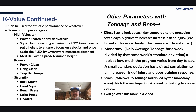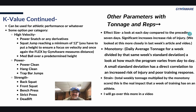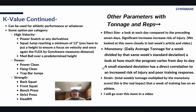Other parameters derived from tonnage and reps include effect size, which we've covered in past videos. Look at each day compared to the preceding seven days — significant increases raise the risk of injury, so step up and step down gradually relative to the past seven days. Monotony is the daily average tonnage for a week divided by that same week's standard deviation. A small standard deviation directly correlates to increased injury risk and poor training response. Strain is the total weekly tonnage multiplied by monotony — that's the real impact.